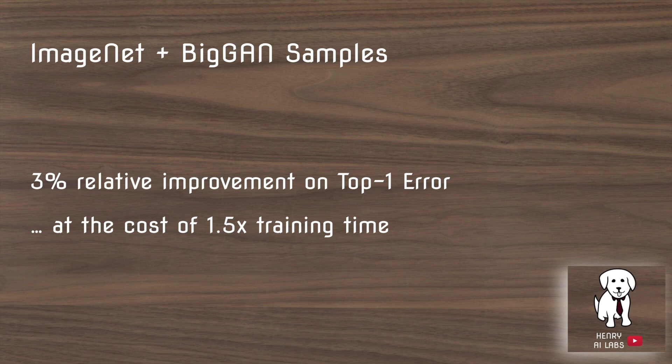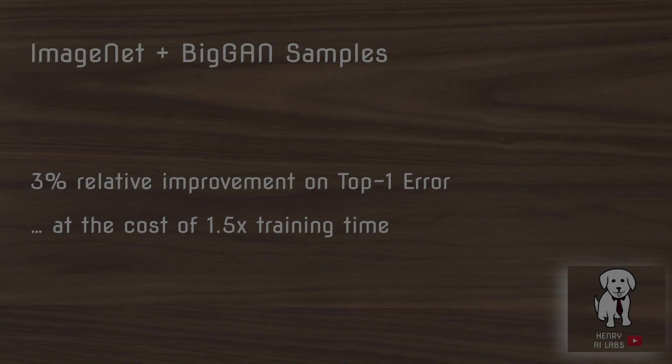Another idea tested was combining the ImageNet data and the BigGAN data for training together. This did result positively, with a 3% relative improvement — not plus 3% in absolute accuracy, but 3% better than the original baseline result. However, this marginal improvement came at the cost of 1.5 times the training time, which is a significant cost.